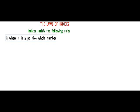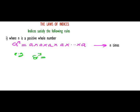Case 1: when n is a positive whole number. If you have a case like a raised to power n, it implies a multiplied by itself n times.